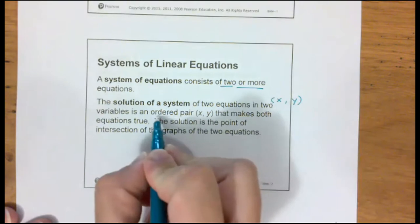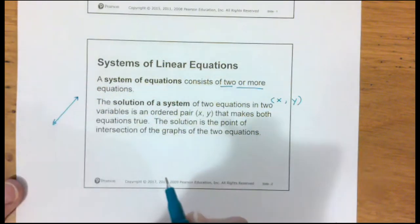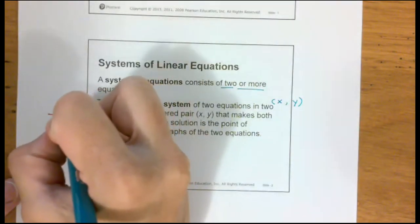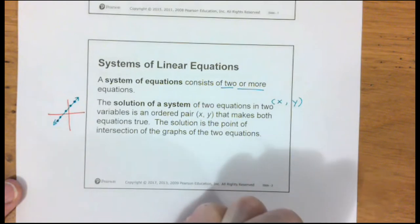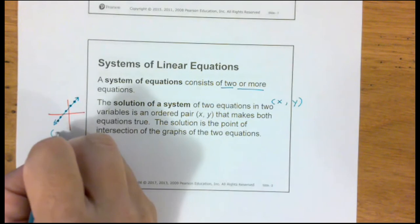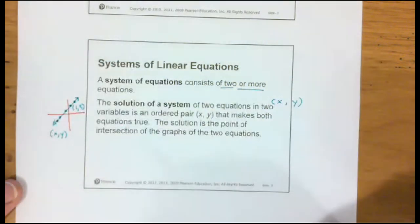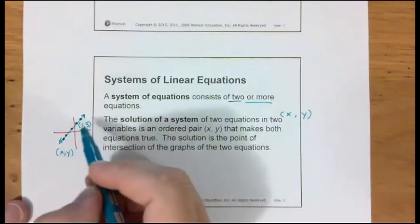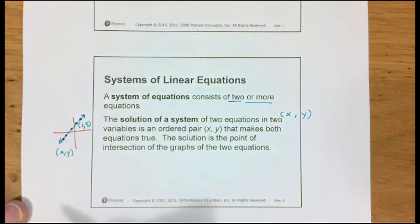The ordered pair just means a point. So if I have a line on the plane, every point along this line — which goes forever in both directions — will be a solution, an (x, y). Maybe this one is (1, 3). Every point on this line will be a solution for the equation of the line. I can put 1 in for x and 3 in for y, and that equation will always be true.